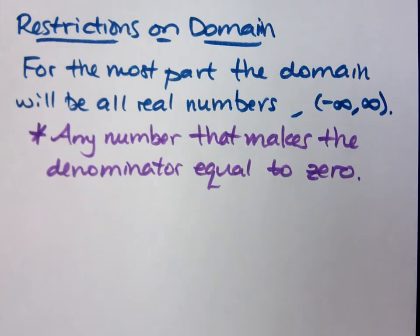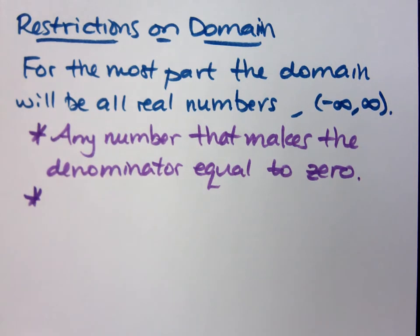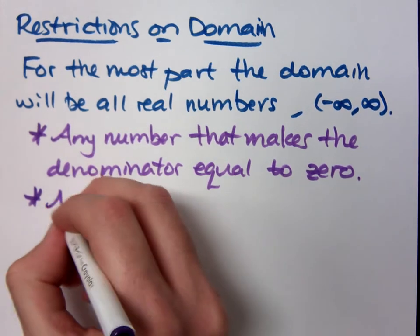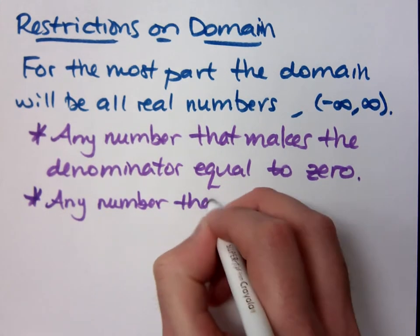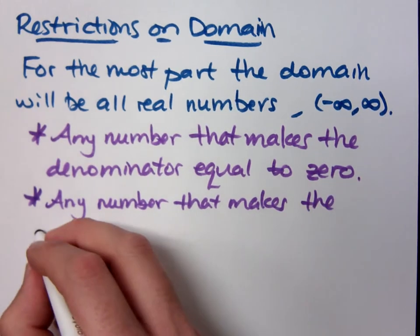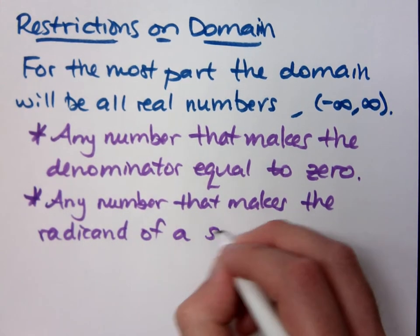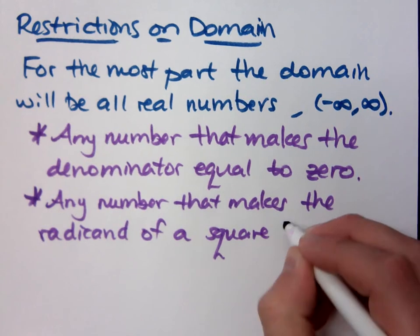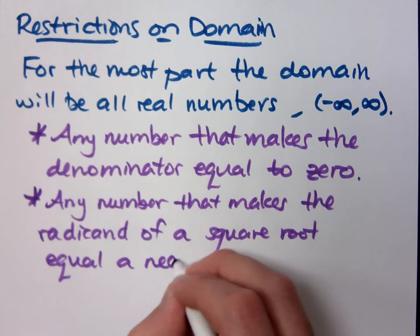So you have to watch out for that. If you have an expression that's a fraction, if there's a value that would make the denominator zero, you have to take that out of the domain, and it won't be all real numbers. Another restriction is any number that makes the radicand of a square root equal a negative number.